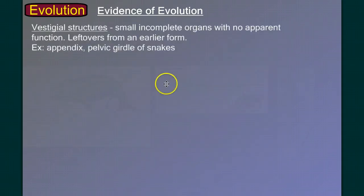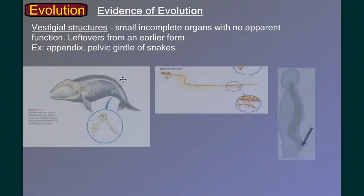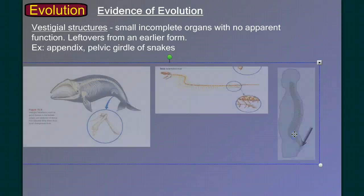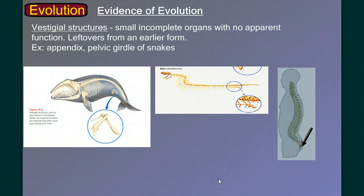Another place where we can see structure giving us evidence of change is in vestigial structures—these small incomplete organs with no apparent function. They seem to be left over from an earlier form. If we see hip bones in a snake, well, hip bones are to connect the legs to the vertebral column, so snakes don't need hip bones, and neither do whales. We see these vestigial hip bones and leg bones in whales that are undersized and certainly have no function. Even the tailbone of humans or the appendix in humans—a tailbone is to support a tail, and we no longer have a tail. It suggests that we evolved from an animal that had a tail.